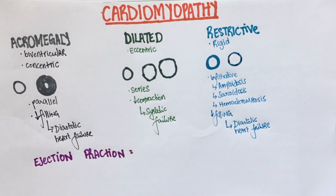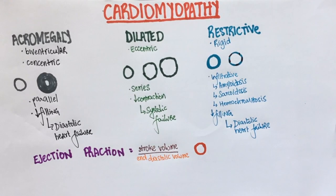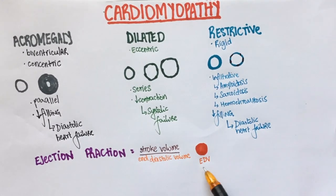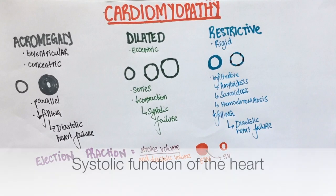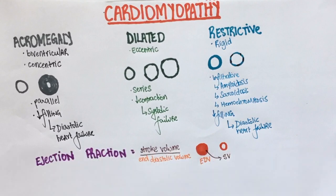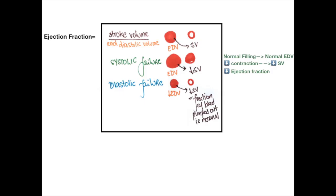Ejection fraction can be understood as stroke volume divided by end diastolic volume. The ventricles get filled during diastole, so end diastolic volume refers to the amount of blood in the heart after diastole. When the ventricles contract, they pump blood out — the amount pumped out is known as stroke volume. Essentially, ejection fraction measures the systolic function of the heart. In dilated cardiomyopathy, the heart is filled well so EDV is fine, but the ventricles aren't able to contract well, so very little blood is pumped out. Hence, stroke volume is decreased, leading to a low ejection fraction.